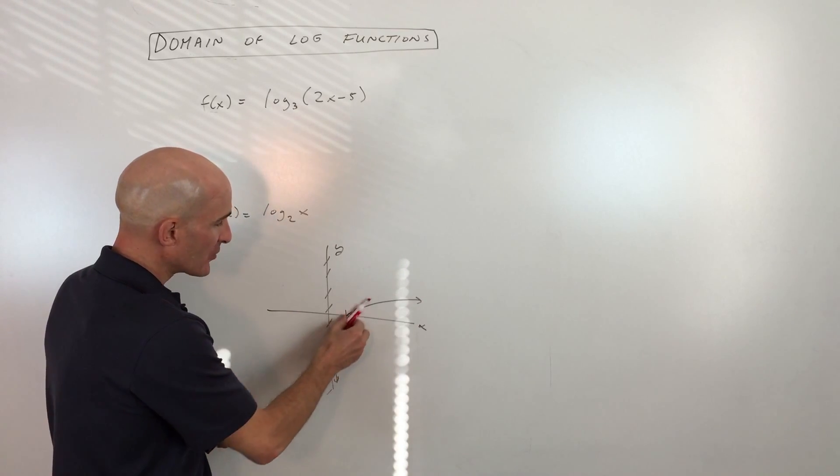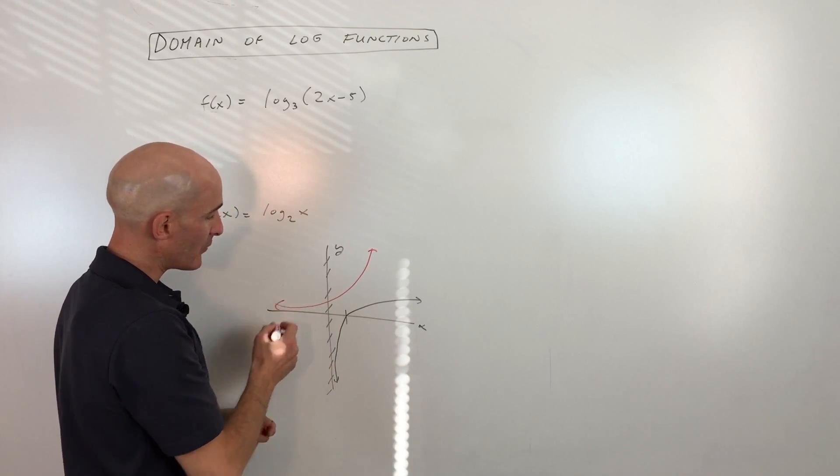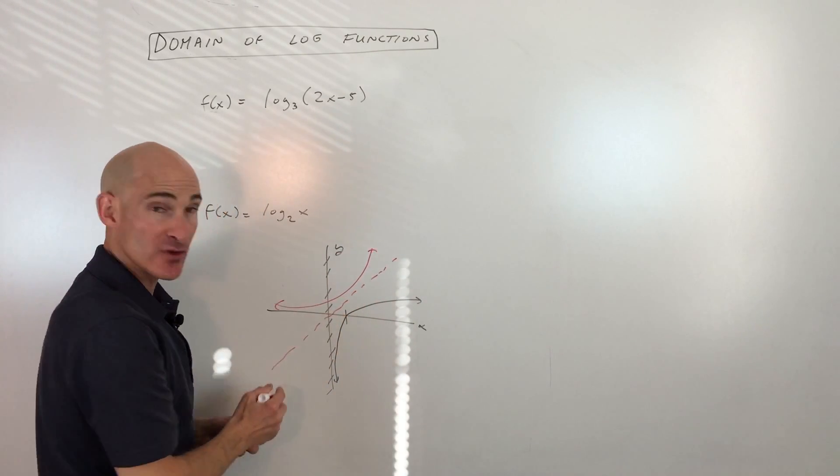You can see the log graph, it looks like this. It's the inverse of the exponential growth graph, and you can see these are reflections over the line y equals x.